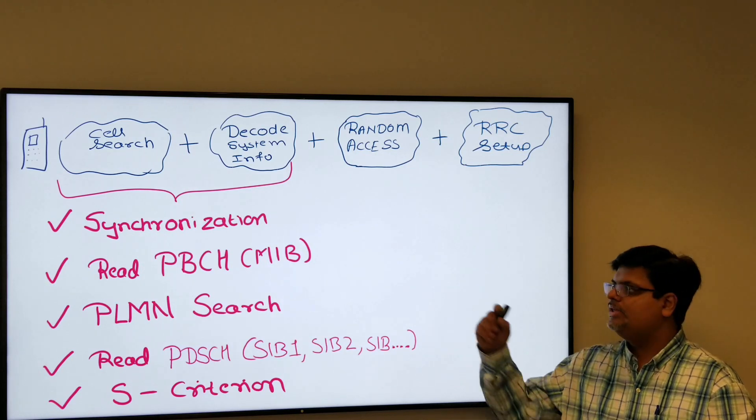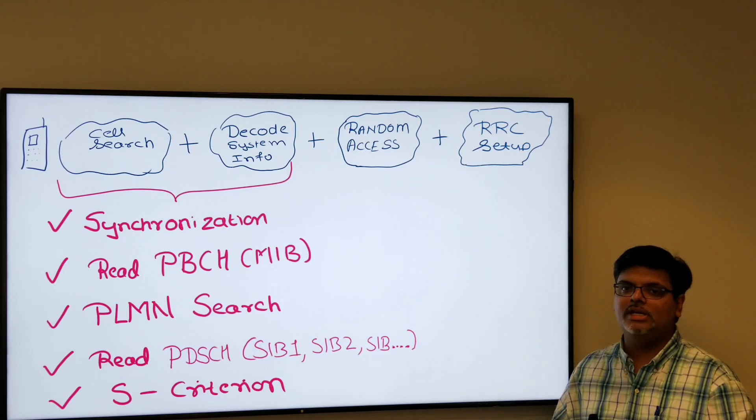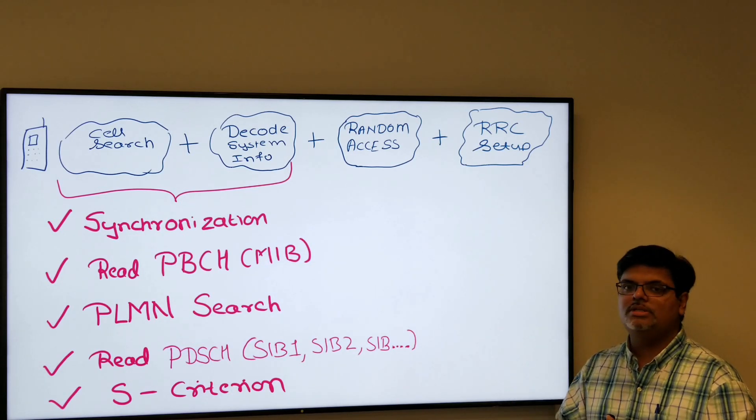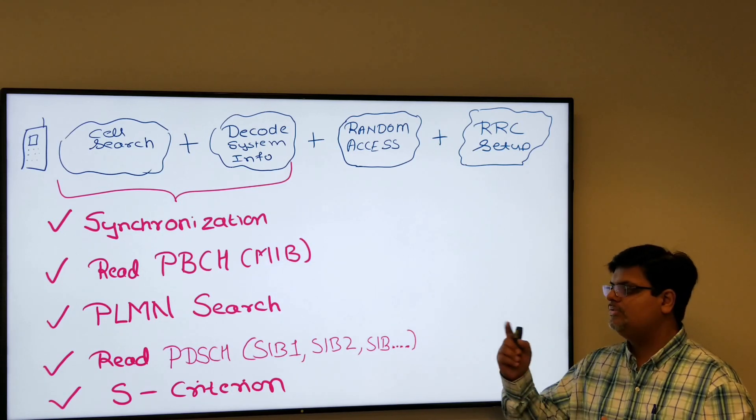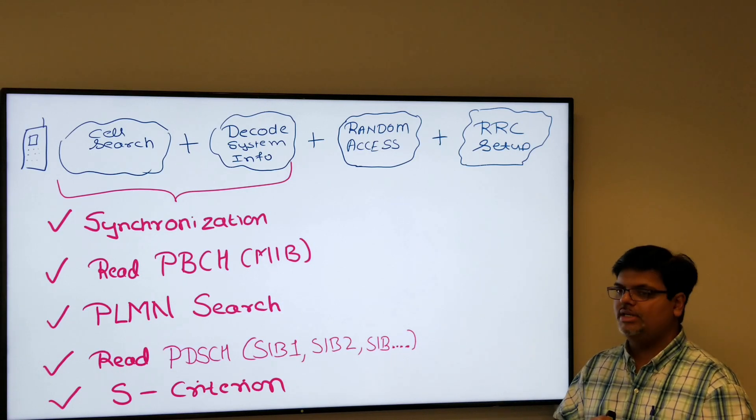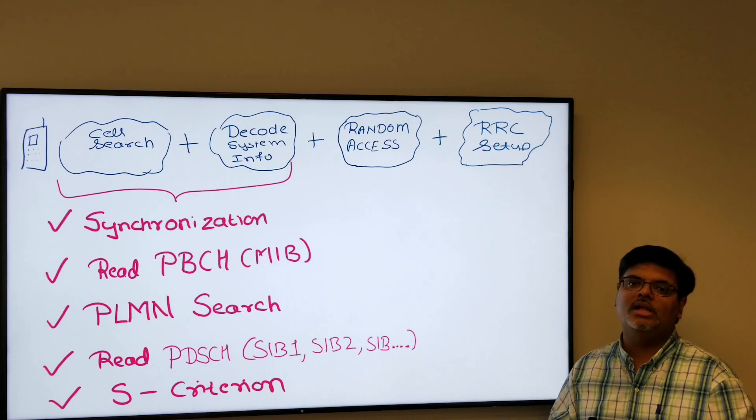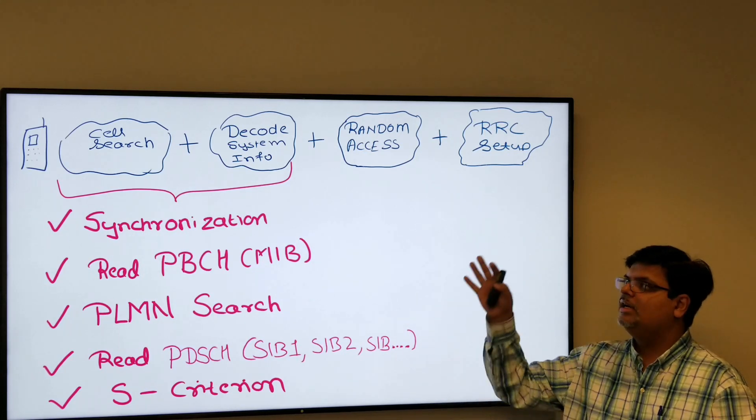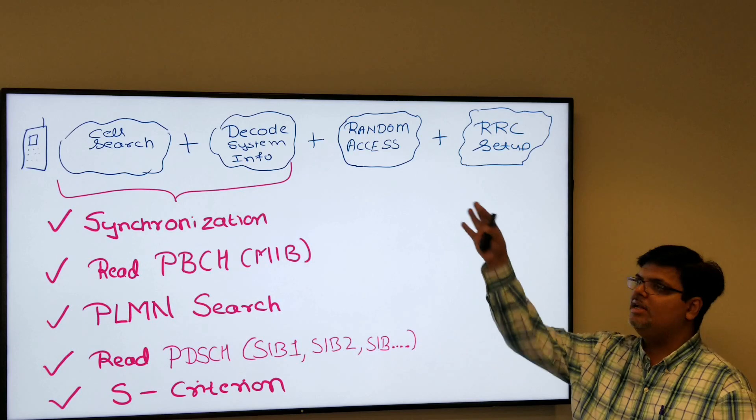MIB is your master information block which it gets from physical broadcast channel. Then your SIB1, which is system information block one, which it gets from PDSCH which is physical downlink shared channel. Then it has to do the PLMN search and PLMN match, after that the S criterion, and then it's basically ready for the random access.